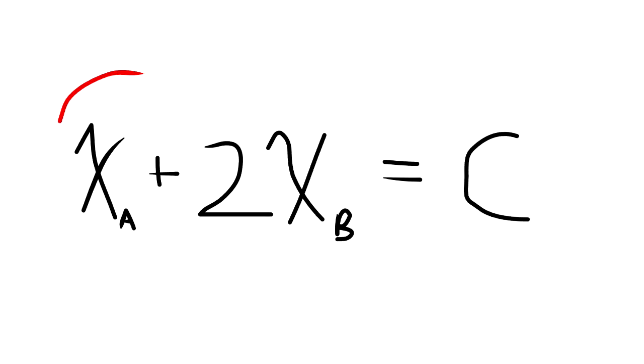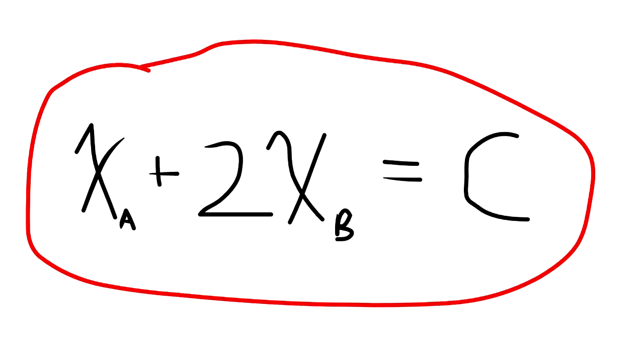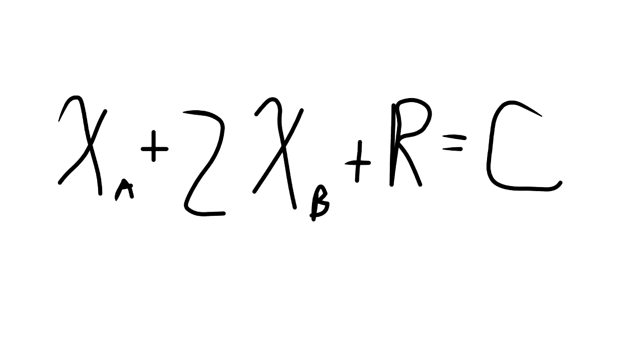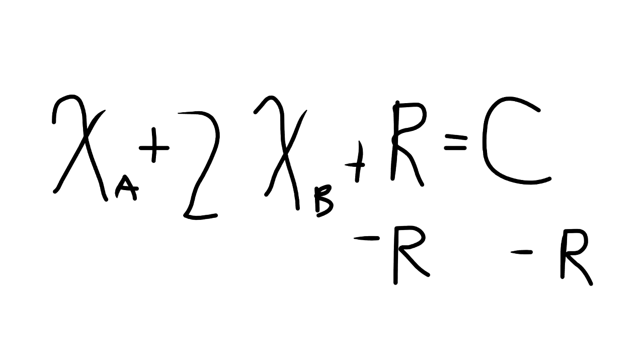You may be wondering why we didn't include the rope around the pulleys themselves into the total rope equation. Let's pretend for a second that we did. If we did, our equation would be X sub A plus 2X sub B plus R equals C, where R is the rope around the pulleys. Since R is a constant, we can subtract it from the left hand side of the equation to get X sub A plus 2X sub B equals C minus R.